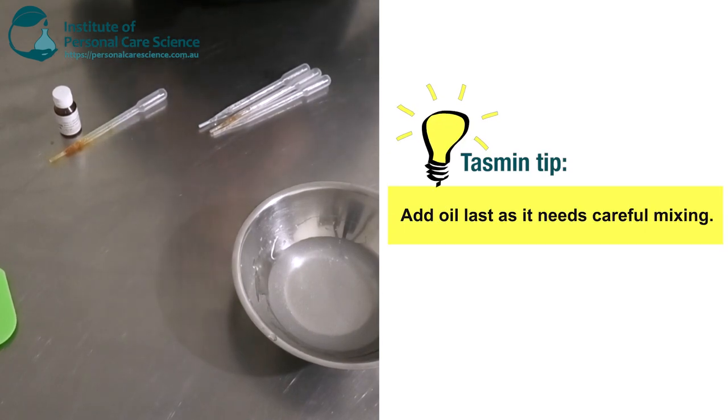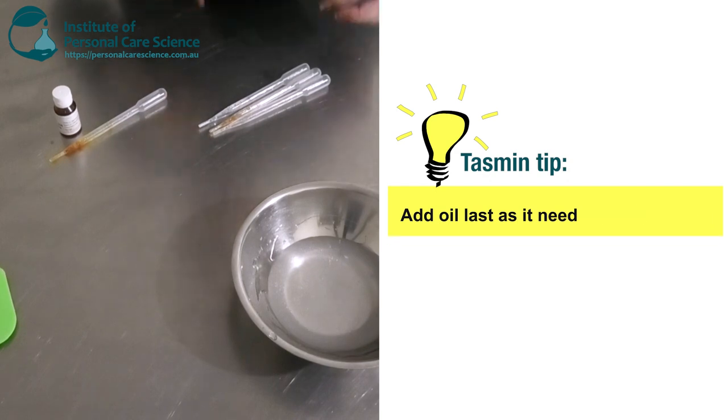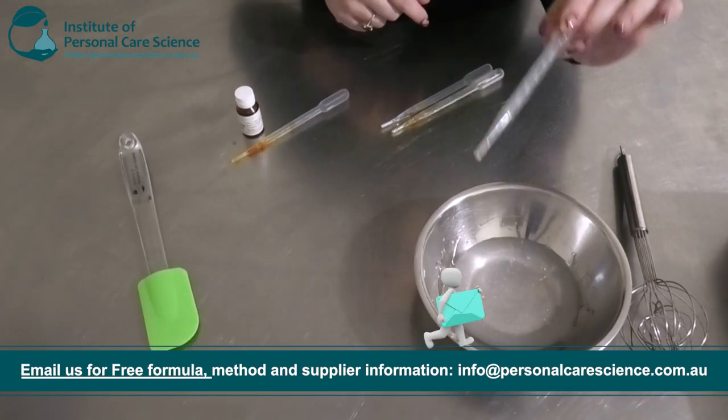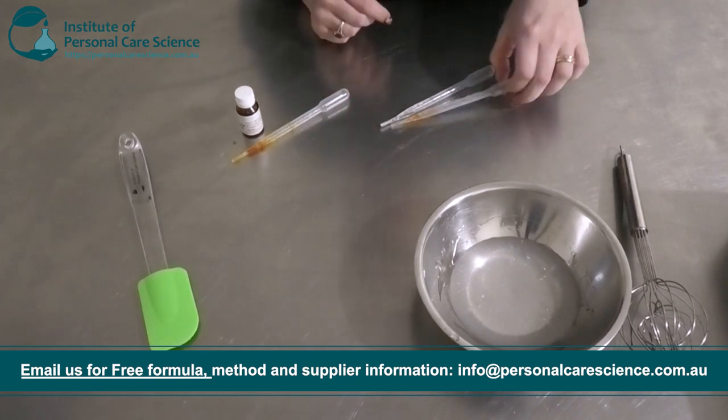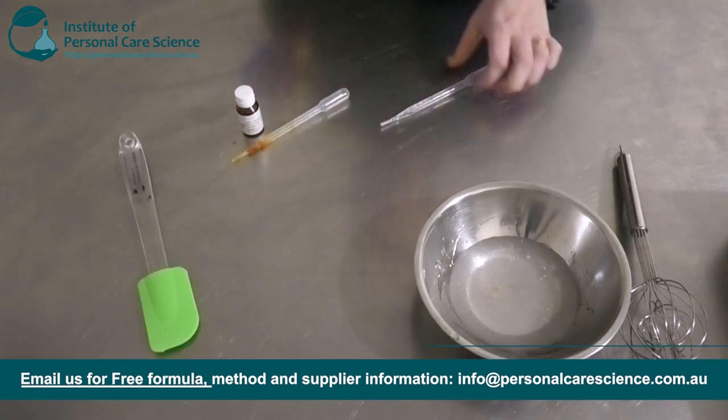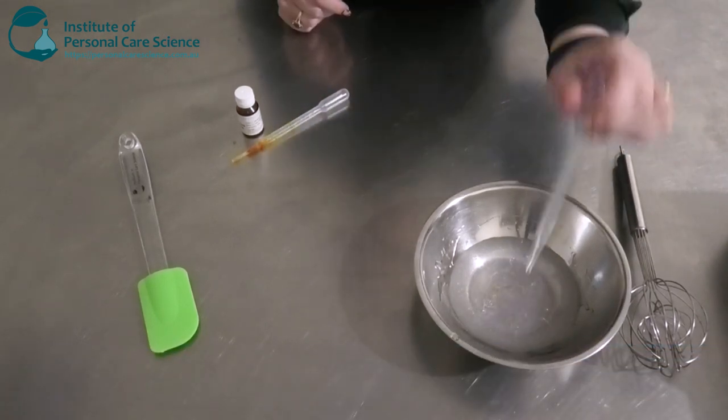Next I'm going to add the rest of my ingredients besides my oil. I'm going to add my oil last because it needs very careful mixing. So I'm going to add a small input of some marine collagen. This is good for a story. I'm going to add a very small input of some tocopherol and also some preservatives.